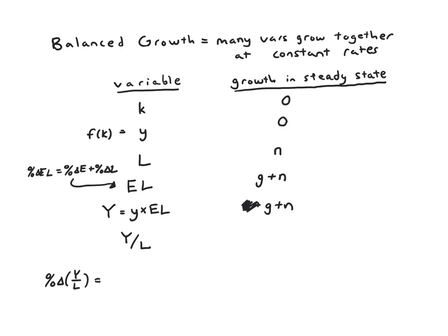And our starting point is going to be to notice that the growth rate in Y over L is, because it's a ratio of two things, it's the growth rate of the numerator minus the growth rate of the denominator. So we just need to know what rate does Y grow at. And didn't we already find that in the previous row? It was g plus n. And then what rate does L grow at? Well, we found that in a previous row. That was n. So the total growth rate is going to be g.